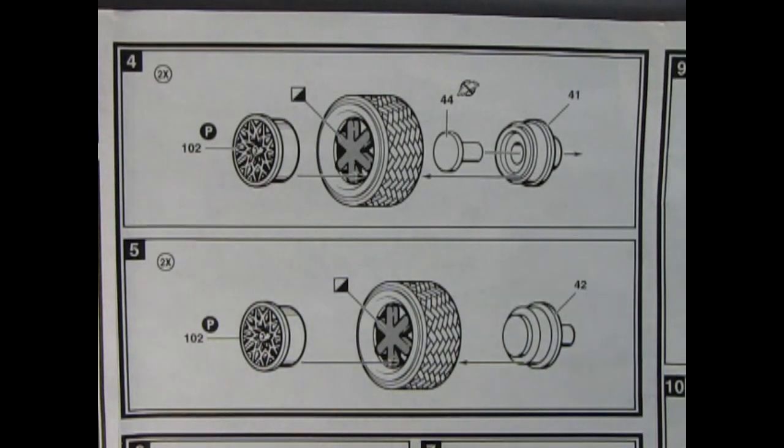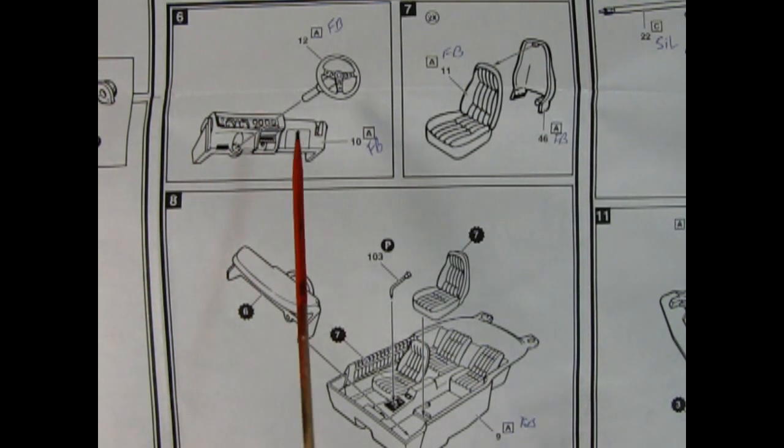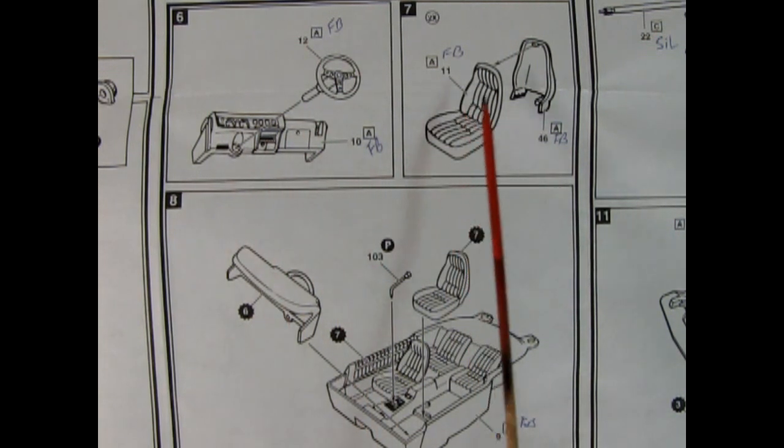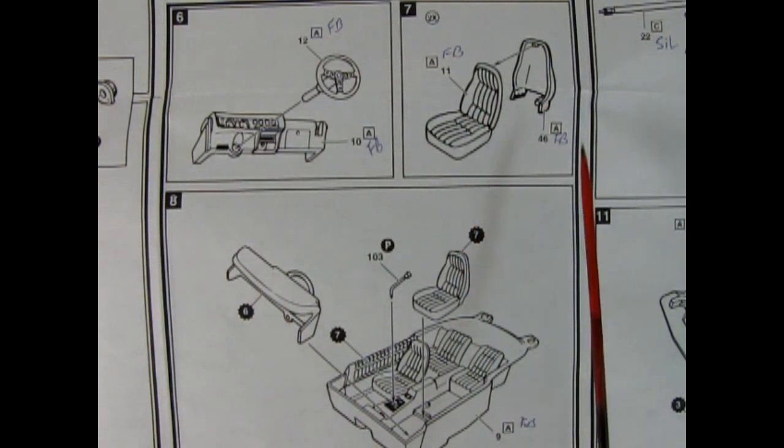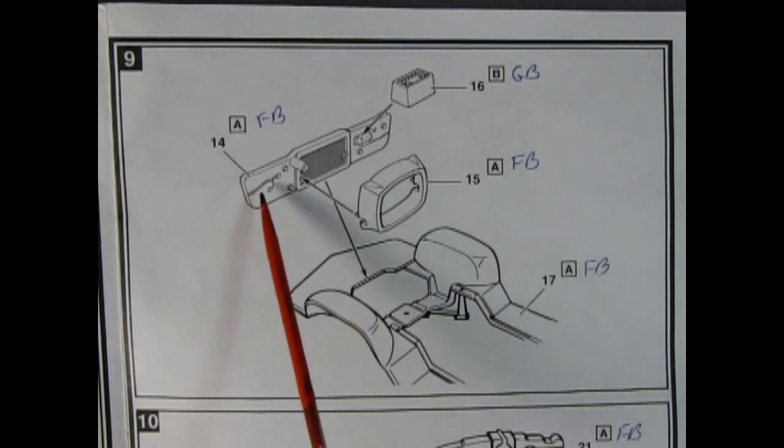Panels six, seven and eight all relate to the interior. Here we have our dashboard and then we have our steering wheel with a console on it which go into the hole here. Our front seats have a front and a back and then the dashboard and the seats drop into our interior bucket tub as well as the chrome plated shifter down below.